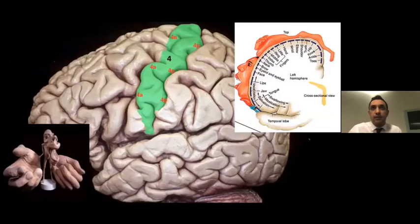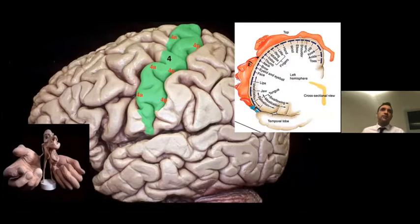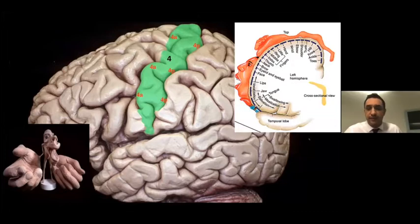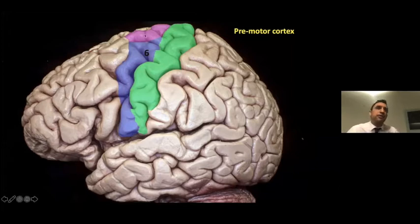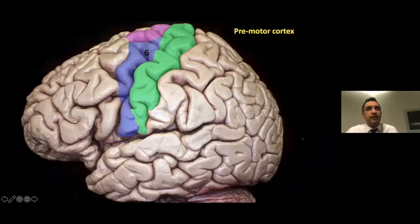In the motor homunculus, the hands and facial muscles — which perform finely controlled and consecutive movements — are represented in a wider area of the primary motor cortex. The premotor area covers the lateral part of Brodmann area 6, just in front of the primary cortex. This region covers the posterior part of the superior, middle, and inferior frontal gyrus, and it consists of the supplementary motor area and dorsolateral prefrontal cortex.